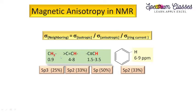In my previous video I have already discussed the theoretical aspect of magnetic anisotropy and how it contributes based on magnetic susceptibility. Here we have a CH3 molecule without any electron withdrawing group, so it resonates at a chemical shift value of 0.9 ppm. This alkene molecule resonates at about 4 to 8 ppm, acetylene resonates at 1.5 to 3.5 ppm, and benzene resonates at 6 to 9 ppm. In the absence of an electron withdrawing group we can explain this on the basis of hybridization, where the contribution of the s orbital plays a vital role.